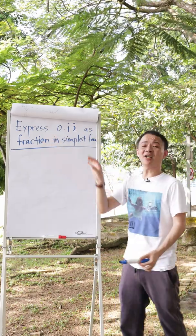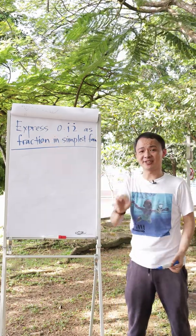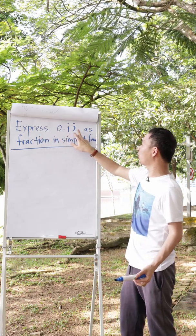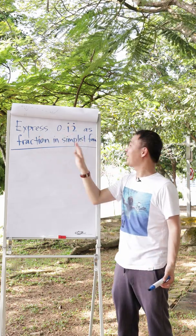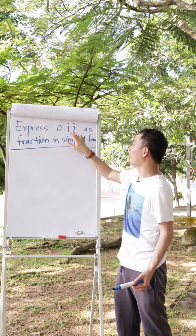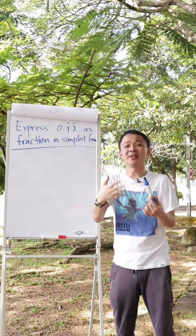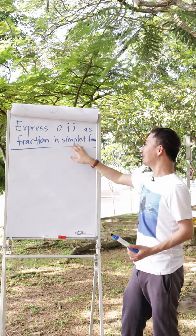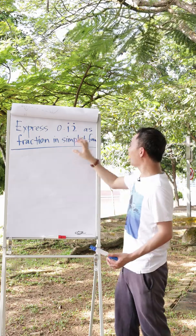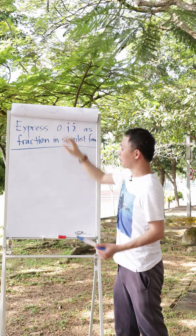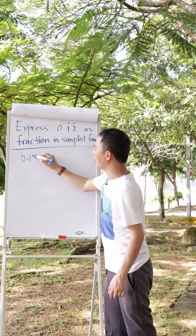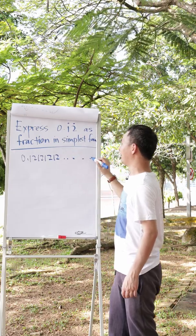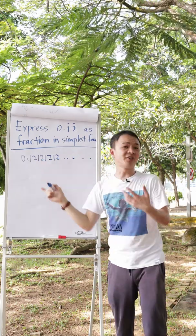Today I'm going to teach you how to solve this kind of recurring decimal question. The question asks you to express 0.12 — do you see the double dot here? Basically it means 0.12121212, keep repeating the 1 and 2, as a fraction in the simplest form. We want to know what fraction gives 0.12121212.